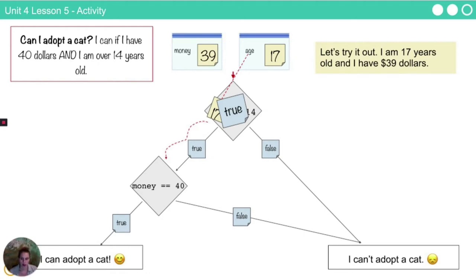Once I'm here, I'm checking is my money value equal to 40? 39 equal to 40? Well darn, that is false. So now that I am here in my flowchart, I'm going to follow the false path. And it turns out today I do not get to adopt a cat. Bummer.